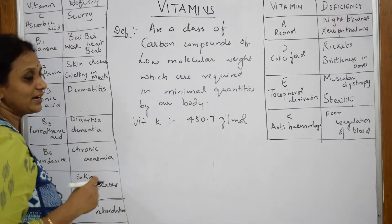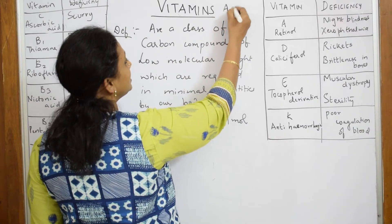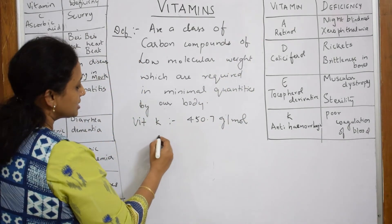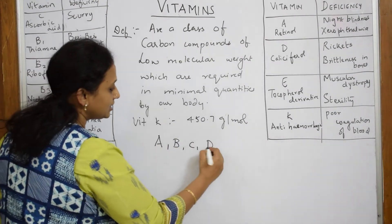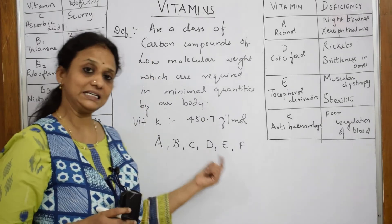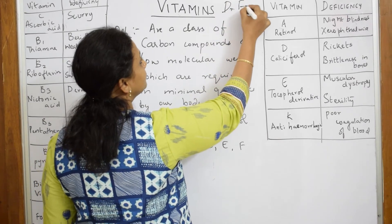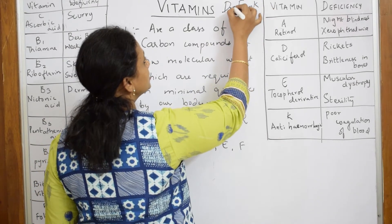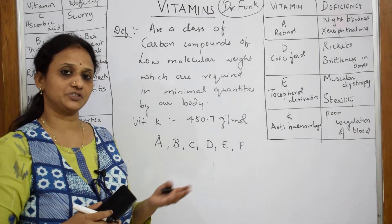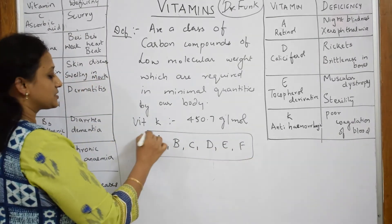Vitamins are named using English alphabets: A, B, C, D, E, and K. The term 'vitamin' was introduced to us by Dr. Funk. He is the person who introduced this term, which we use to explain the deficiencies, the structure of the compounds, how they act, and where they are present.